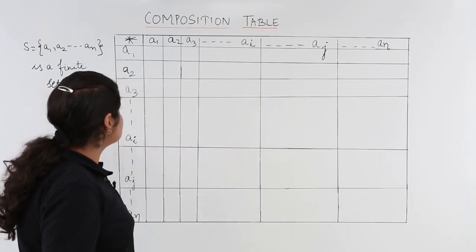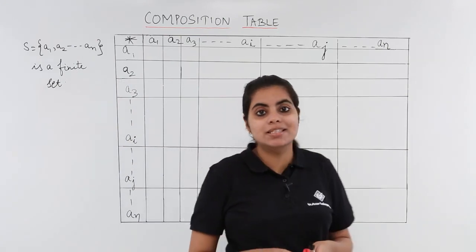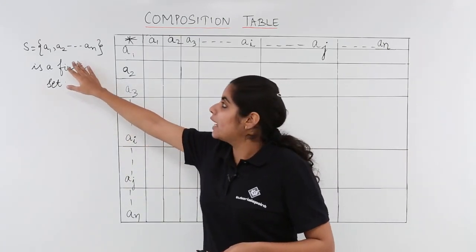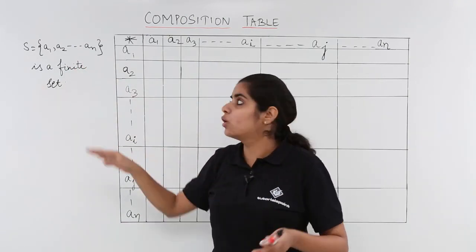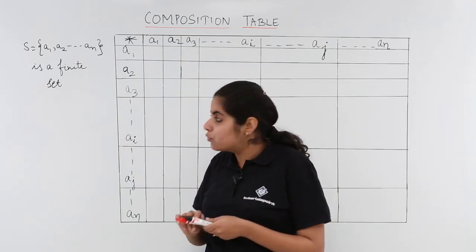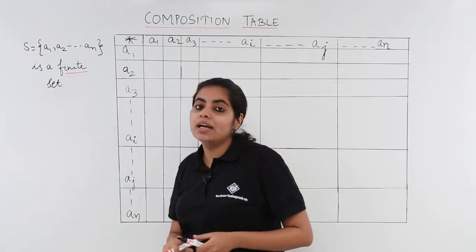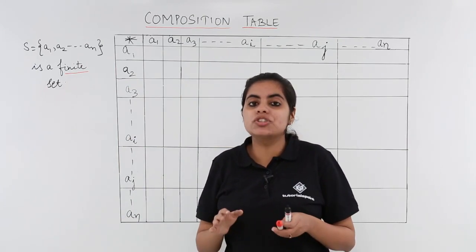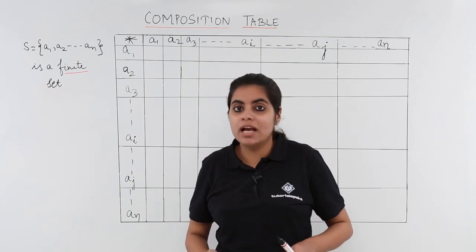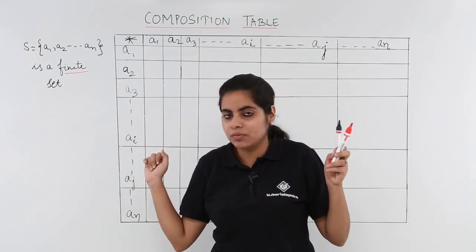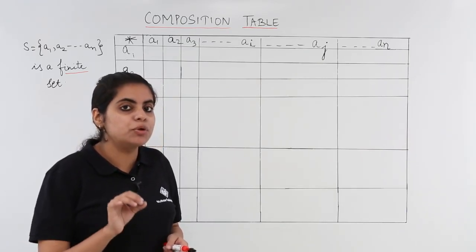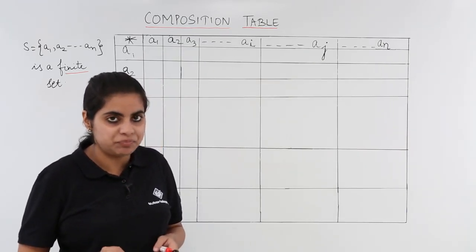Suppose I have a set S, a set called capital S, and the set has some elements from a1, a2 till ai, aj, followed by an, and that set is a finite set. A finite set is one in which the elements are finite, that means they can be counted. They are not infinite in number. So I have a set which has some finite elements. Number of elements is fixed to n.